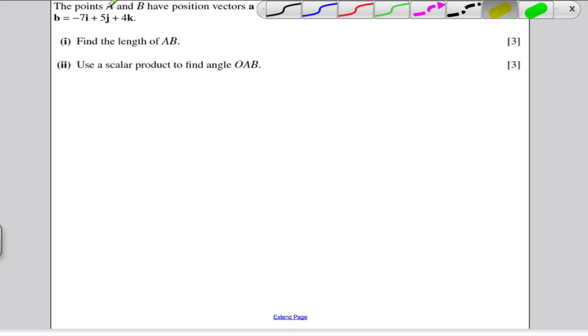So A is a point in space, capital A and B is a point in space, and they have position vectors, little a and little b, and the key point is that it's relative to the origin. Now, I'm not going to draw these accurately because I don't want to have to draw in three dimensions, so I'm just going to draw them very roughly. And I'm going to say that here's my origin here, O.